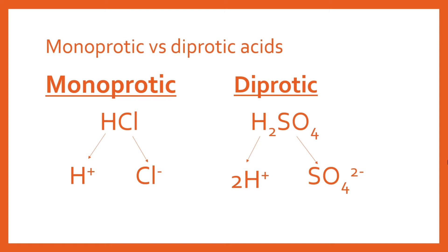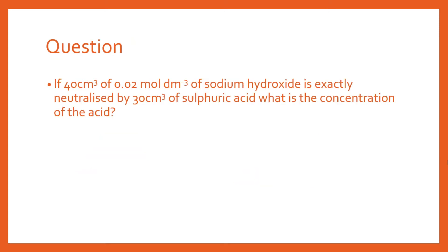Your hydrogen ion is what determines the pH of an acid, so you're going to have to take that into account. We've got a question here for our worked example: 40 cm³ of 0.02 mol/dm³ of sodium hydroxide is exactly neutralized by 30 cm³ of sulfuric acid. What is the concentration of the acid? We know everything about the sodium hydroxide, but we only know the volume of the sulfuric acid.